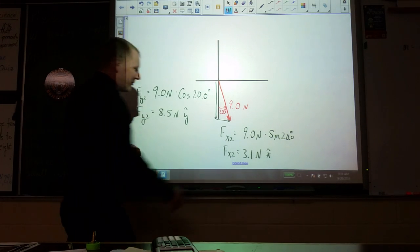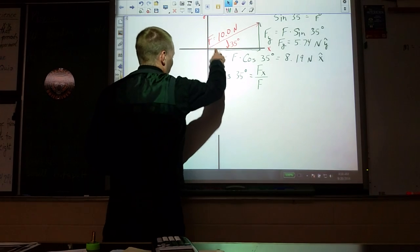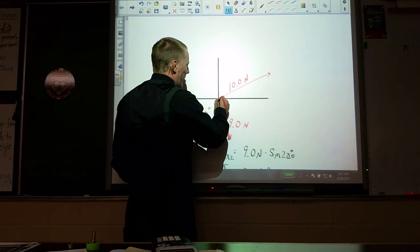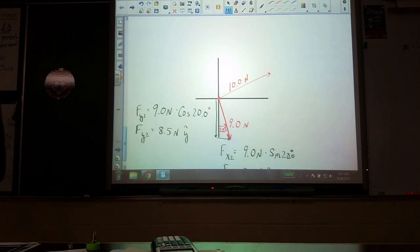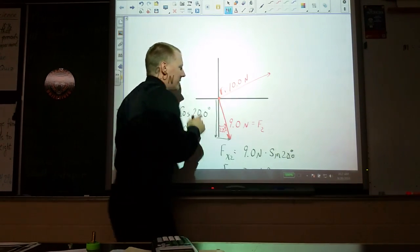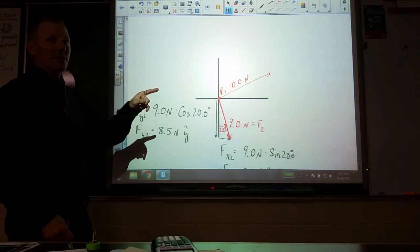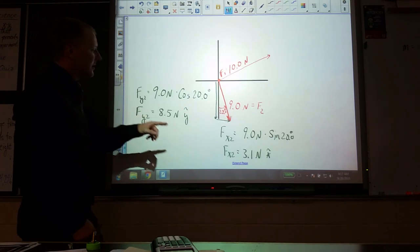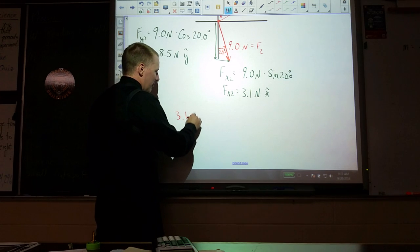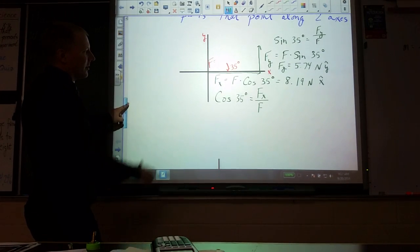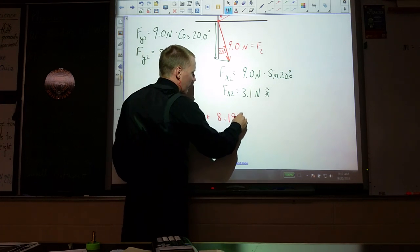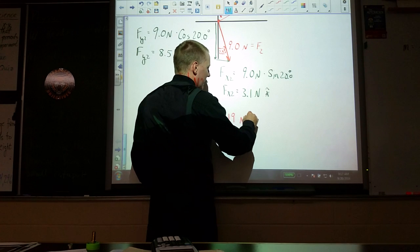If we had these two vectors applied to the same object and want to figure out what direction that object will experience the net or total force, we want to go back and use those components because it's pretty hard to just add these two. In the x direction, we have 3.1 newtons from Fx2 and 8.19 newtons - both in the same direction. We can add both of those.